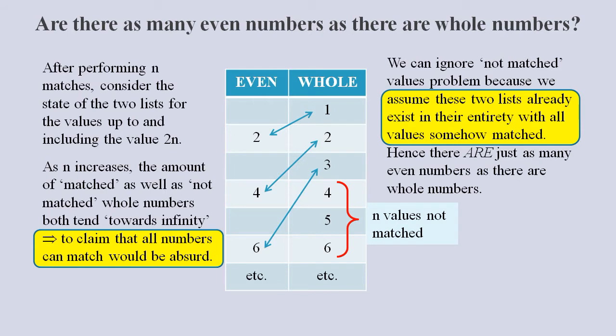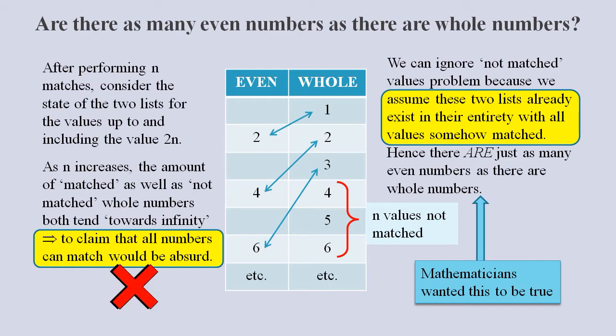This bizarre and totally inconceivable state of affairs is supposed to prove to us that there are just as many even numbers as there are whole numbers. Mathematicians choose to accept the mind-bending argument that all values can mysteriously match up, rather than the more straightforward argument that they obviously can't.